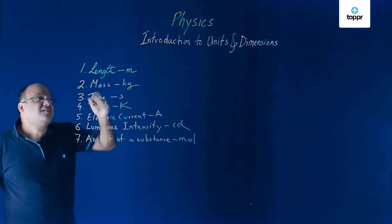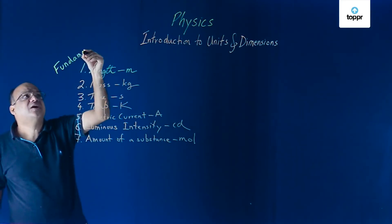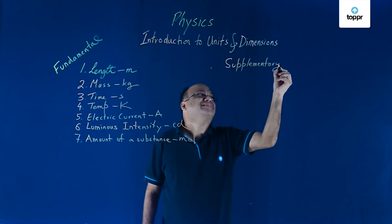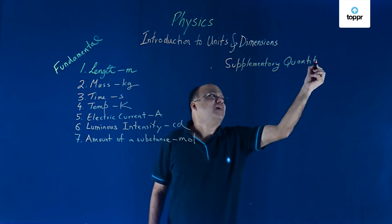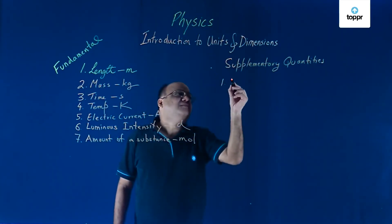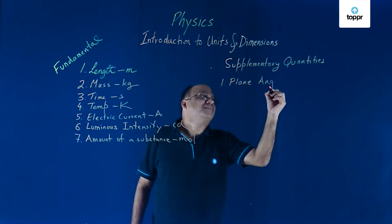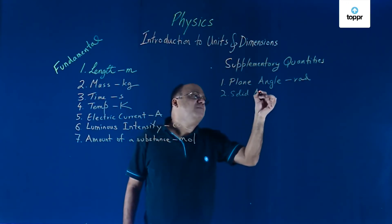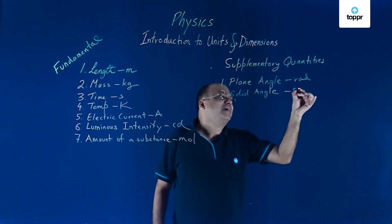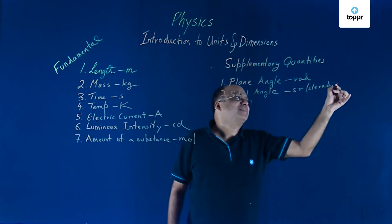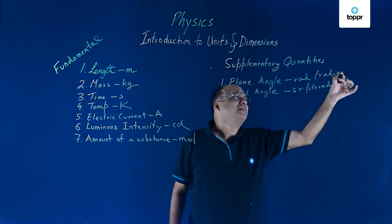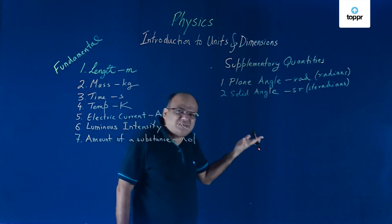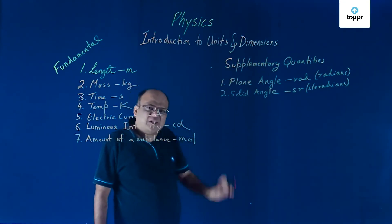In addition to these fundamental quantities, we have got two supplementary quantities in SI. Supplementary extra quantities. Supplementary quantities, why they are called supplementary also we will understand. First one is this plane angle, that we measure in radians, R-A-D. And solid angle, that we measure in steradians, S-R-S-T-E, then write radians. Radians is the full name. These are called supplementary quantities because these are actually dimensionless quantities, we learn about dimensions later. But they have got units, they are dimensionless, that's why we call them supplementary quantities.